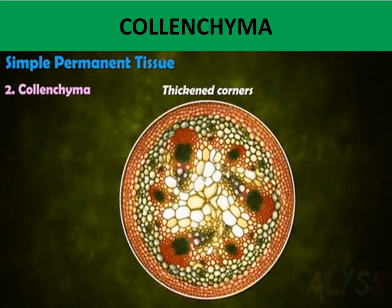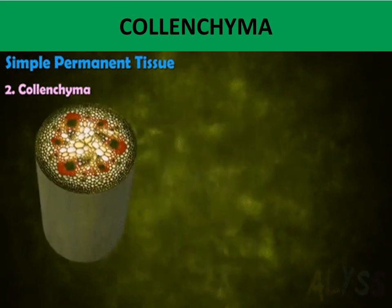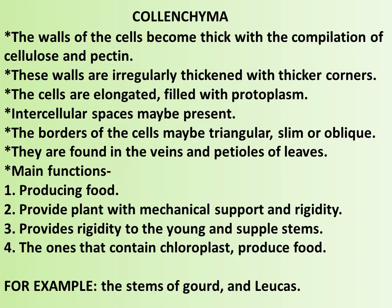Colenchyma: the walls of the cells become thick with the accumulation of cellulose and pectin, with irregularly thickened and thicker corners. The cells are elongated and filled with protoplasm; intercellular spaces may be present. The borders of the cells may be triangular, slim, or oblique. They are found in the veins and petioles of leaves. Main functions: producing food, providing mechanical support and rigidity to the plant, providing rigidity to young and supple stems, and those that contain chloroplasts produce food. Examples include the stems of gourd and lotus.